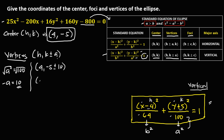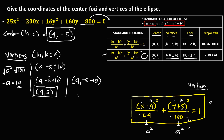The two vertices are: (4, negative 5 plus 10) and (4, negative 5 minus 10). Simplifying: negative 5 plus 10 is positive 5, and negative 5 minus 10 is negative 15. So the coordinates of the vertices are (4, 5) and (4, negative 15).